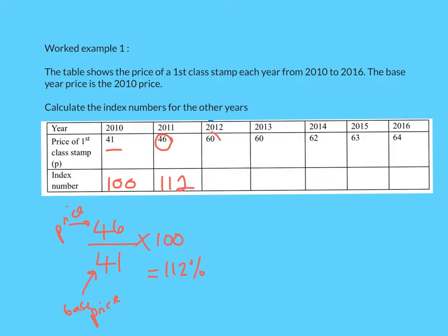For the next year, the price is 60. Once again, it's 60 divided by the base year price, which is always 41, times 100. That gives 146 — so 146. Pause the video and see if you can work out the other four years.